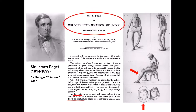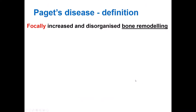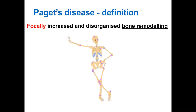He described it as a form of chronic bone inflammation. This is a photograph of his first patient, and we can appreciate the significant long bone deformities. However, nowadays we know that Paget's disease is in fact due to focally increased and disorganized bone remodeling. In Paget's disease, this remodeling process gets out of control, and the foci become bigger, progressing down the shaft of the long bone at a rate estimated at about one centimetre a year.